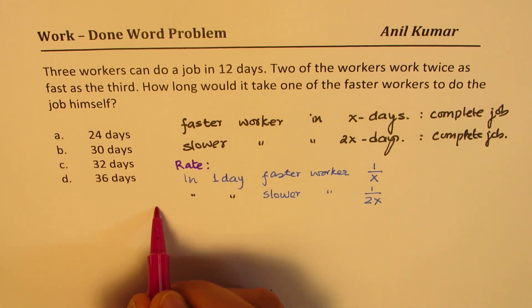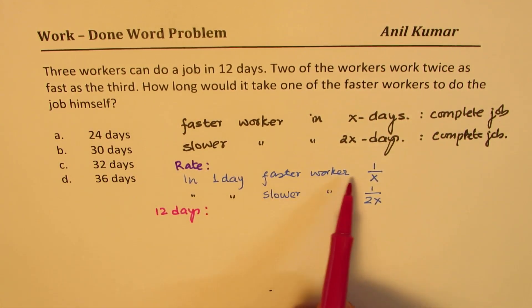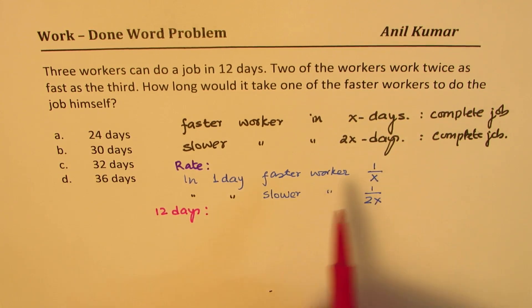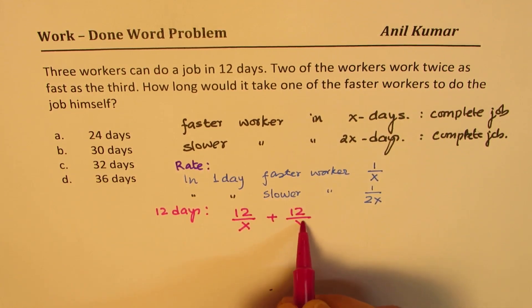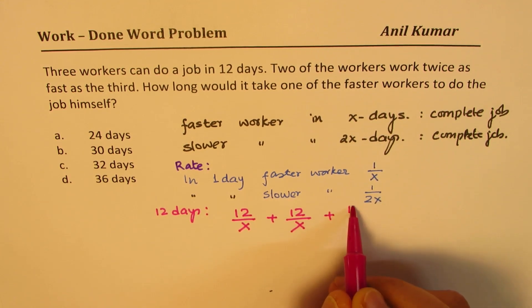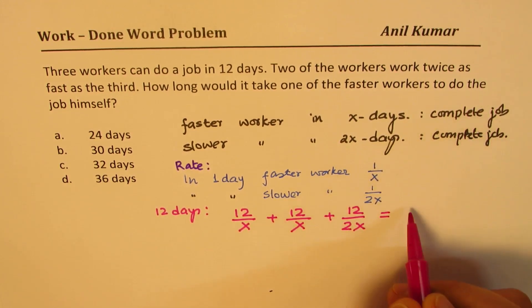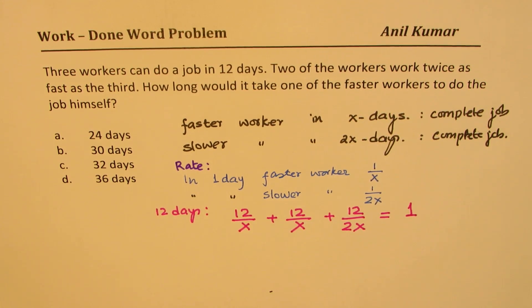Once we know rate, think about the whole job being completed in 12 days. So if it is in 12 days the whole job is completed, then there are two faster workers. In one day he will do 1/12, so in 12 days these faster workers will do 12/X, plus 12/X. These are the two faster workers. And the slower worker will do, well he's also working for 12 days, so 12/2X. And complete job, whole job, means one.